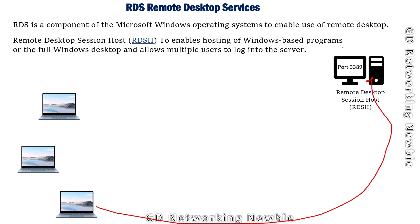On that server we can have different roles. Roles are basically used to manage specific functionalities of the operating system or computers. In RDS we have different roles, and if you enable these different roles they will provide different kinds of functionality. The very first role we are going to discuss is Remote Desktop Session Host, or RDSH.